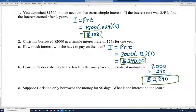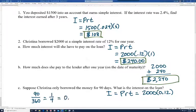Let's see. Suppose Christina only borrowed the money for 90 days. What is the interest on the loan? So we're going to use the same formula. We're going to get 2,000 times our interest rate, which is still 12%, times our time. Now 90 days, now think about this, our time is in years. So it's 90 out of 360 days. So for these types of problems, we use 360 days for a year. And so this reduces to one-fourth.